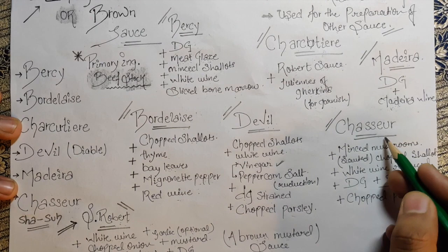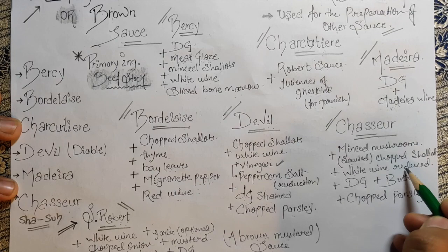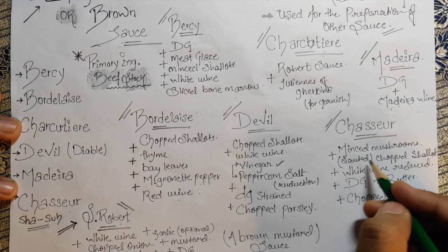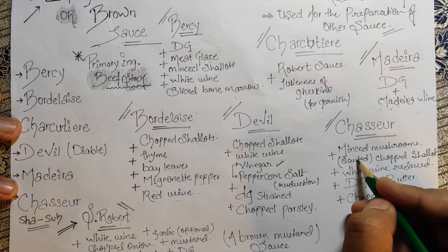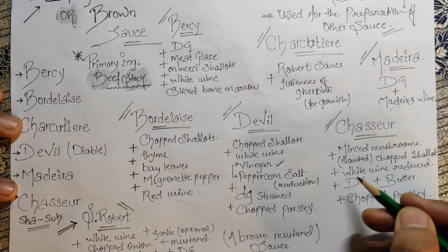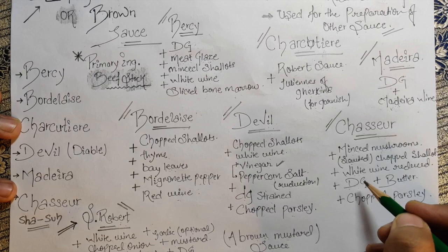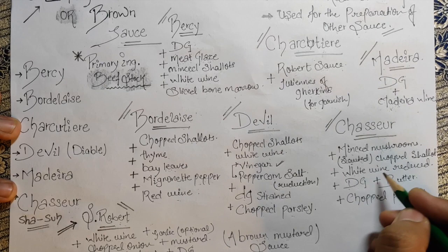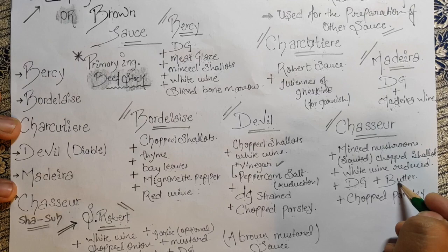For Sauce chasseur: the pronunciation is different — 'chasseur.' Start with minced mushroom that is sautéed. We sauté the mushroom because mushrooms contain moisture that needs to come out — otherwise the sauce will be watery. Then add chopped shallots and white wine reduction, demi-glace, and butter for shine and silkiness. Finish with chopped parsley — your chasseur sauce is ready.